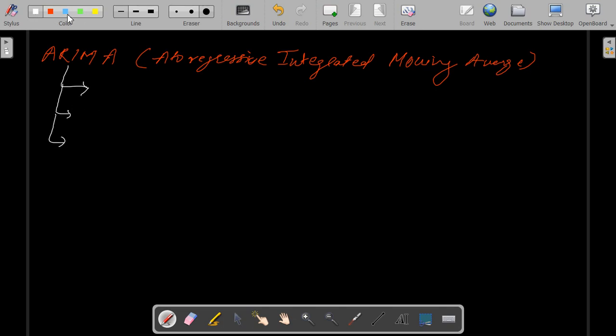First is the AR part, the second is the integrated part, and the third is moving average, where AR is represented by a variable p, I is represented by a variable d, and MA is represented by a variable q.